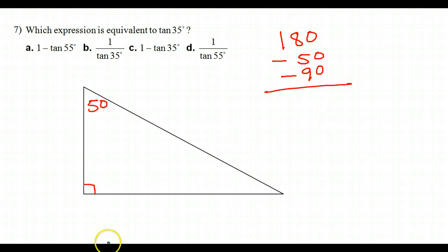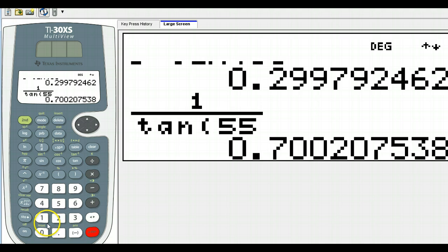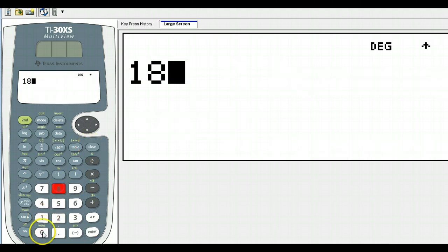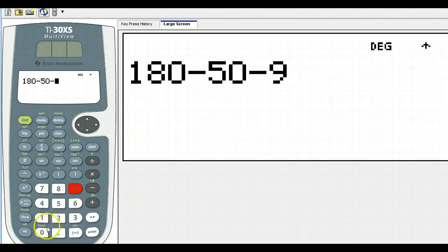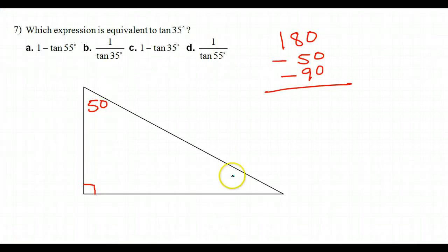Let's do that. So 180. Let's clear this out. 180 minus 50 minus 90. Subtracting from 180, that leaves 40. Now let's think about that.